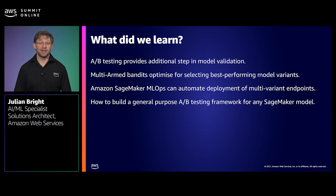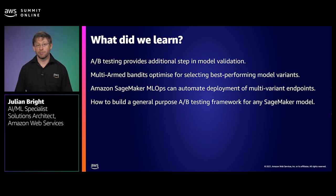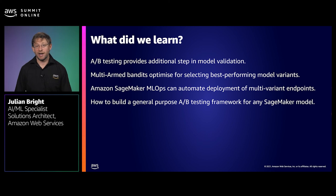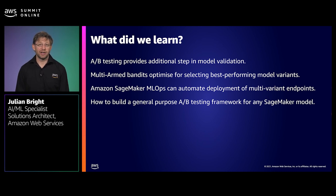So what did we learn today? We learned that online A-B testing provides an additional step in model validation. That multi-armed bandits optimize for selecting the best performing model variants by exploring early during an A-B test and exploiting those models that are delivering the highest reward. We saw how Amazon SageMaker MLOps can automate the training and deployment of multi-variant endpoints, and we learned how to build a general purpose A-B testing framework and model serving infrastructure that can apply to any Amazon SageMaker model.